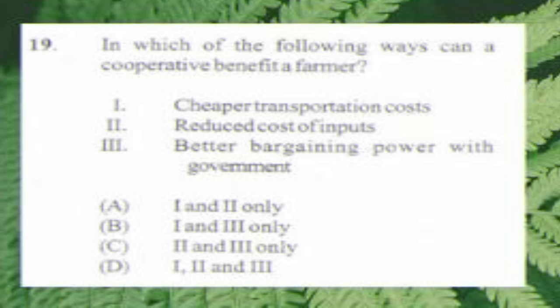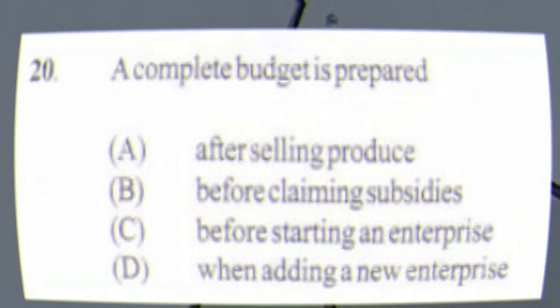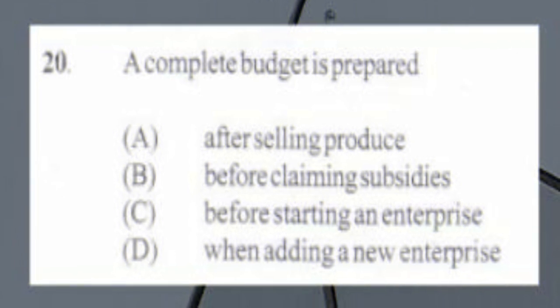Question number 20. A complete budget is prepared: A. After selling produce, B. Before claiming subsidies, C. Before starting an enterprise, D. When adding a new enterprise. The answer is C, before starting an enterprise.